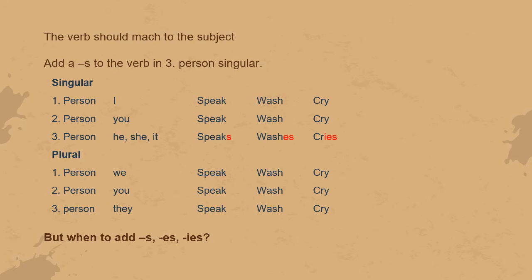As you can see in the table, we have the verb 'speak', and it's the same for all the persons. But for the third-person singular, there is an -s added. It's also the same for the verb 'wash' and 'cry'. But the difference between them is that for 'speak', only -s is added, while for 'wash', -es is added.